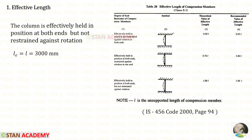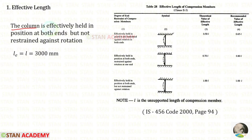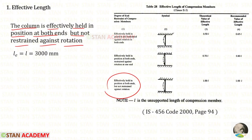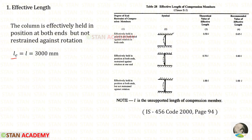First we have to find the effective length. We open IS 456 page number 94. Since the column is effectively held in position at both ends but not restrained against rotation, we select that condition. The effective length LE is equal to the unsupported length L, which is 3000 millimeter.